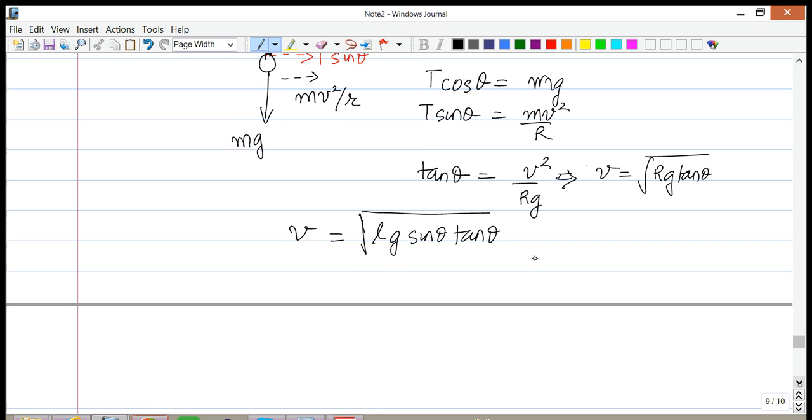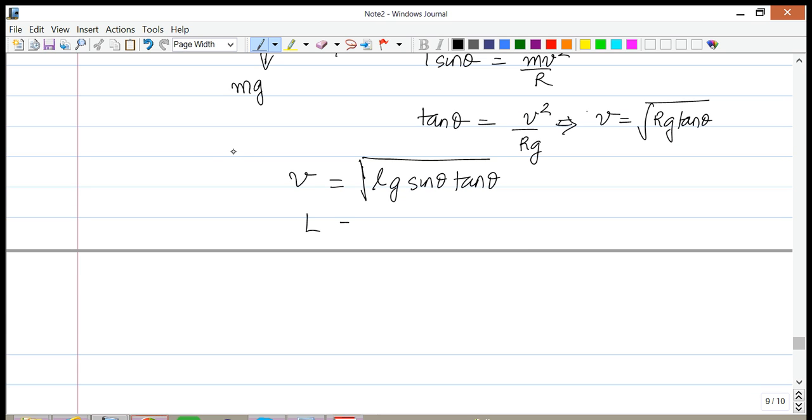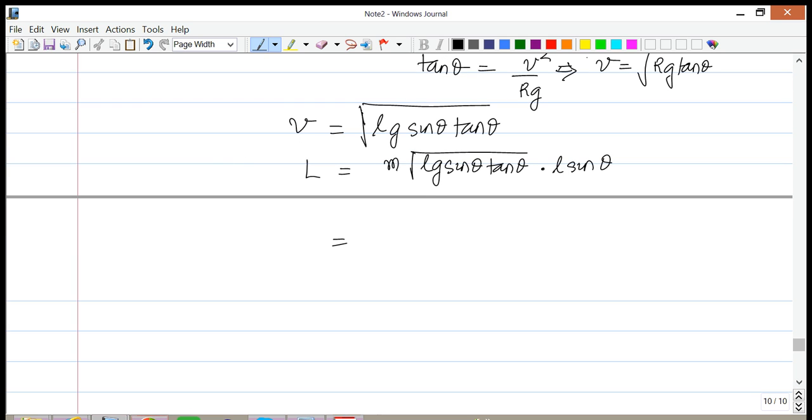Now that we have this, my angular momentum is simply equal to M times square root of LG sine theta tangent theta, which is V, times R, which is L sine of theta. So we have all the pieces to the puzzle.